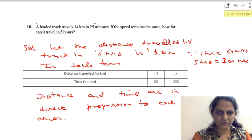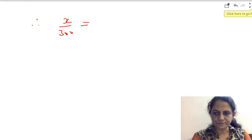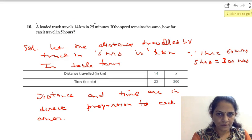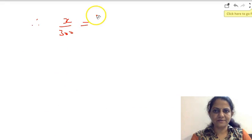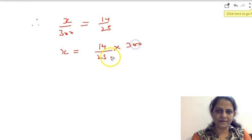So I can write X over 300 is equal to 14 over 25. So X is equal to, cross multiplication, we will do 14 over 25 into 300.